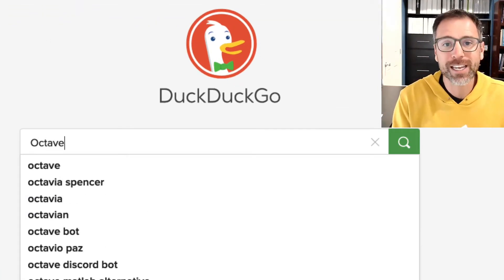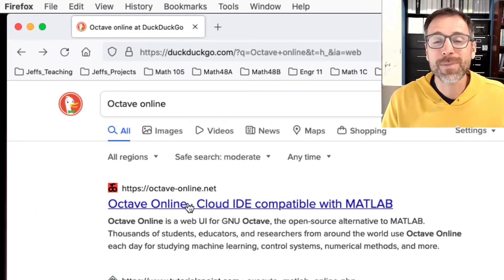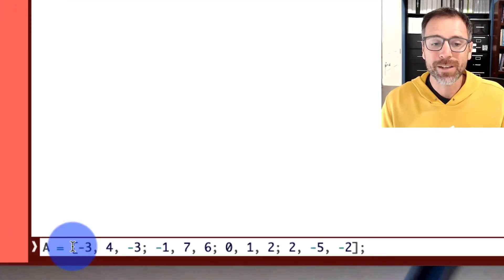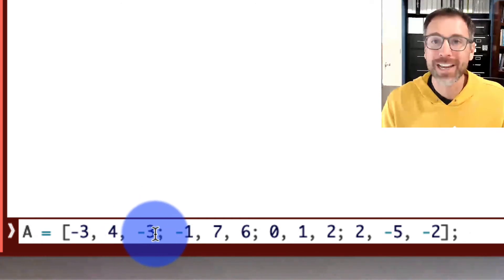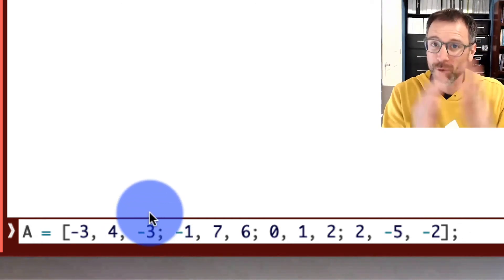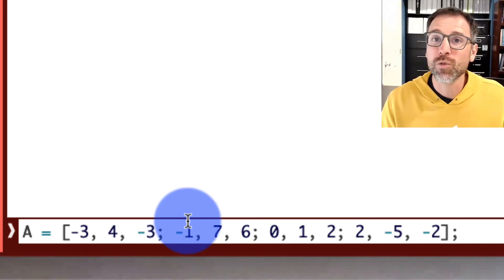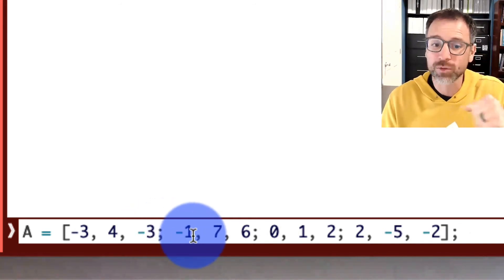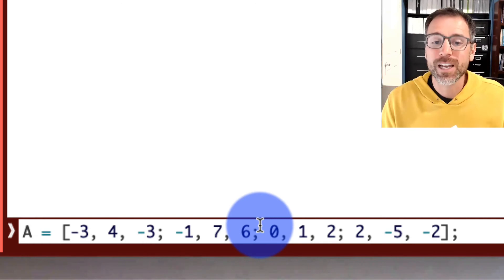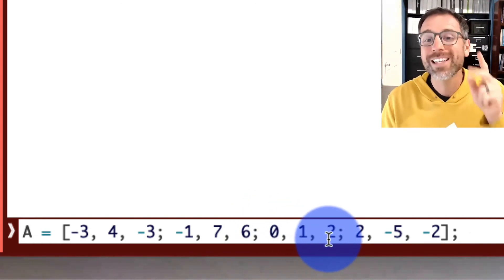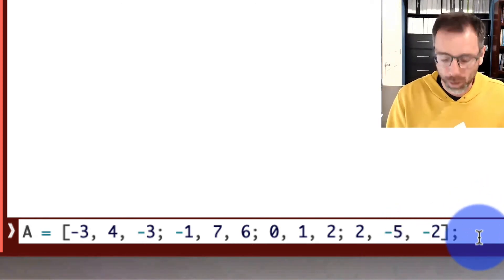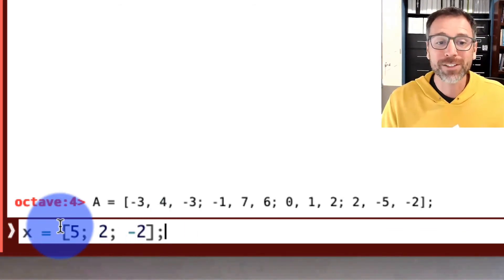Let's go ahead and search Octave Online. The first link that comes up is our Octave Online link. Here we see an online matrix calculator. First thing we'll do is store A in memory. So we set A equal to negative 3 comma 4 comma negative 3. Commas are used to delimit columns, to separate column entries. Semicolons are used to delimit rows, to separate rows. So we go negative 3 comma 4 comma negative 3, semicolon, negative 1 comma 7 comma 6, semicolon 0 comma 1 comma 2, semicolon 2 comma negative 5 comma negative 2. And the semicolon suppresses the output.